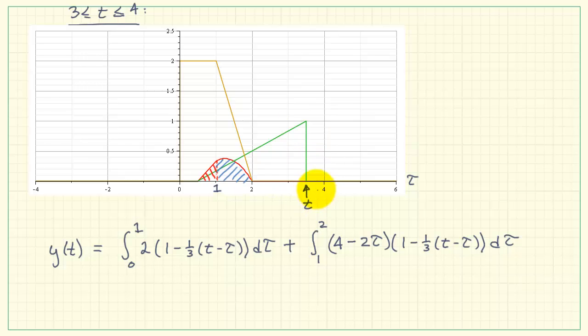All right, moving on to the next region. Note that we still have two regions for the overlap. Now in this case, this trailing edge is at time t minus three. Therefore, we need to integrate from t minus three to one. Now in the second region, we are still integrating from one to two. That remains the same. And we have this result.